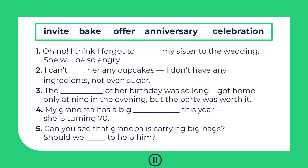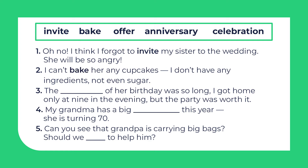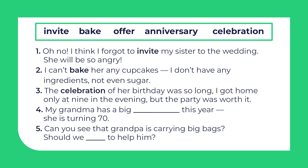Now let's practice a bit. Pause the video and read the sentence on the screen and choose one word from the box that fits the best. 1. Oh no, I think I forgot to invite my sister to the wedding. She will be so angry. 2. I can't bake her any cupcakes. I don't have any ingredients, not even sugar. 3. The celebration of her birthday was so long, I got home only at 9 in the evening, but the party was worth it. 4. My grandma has a big anniversary this year. She is turning 70. 5. Can you see that grandpa is carrying big bags? Should we offer to help him? Hey, you did it!